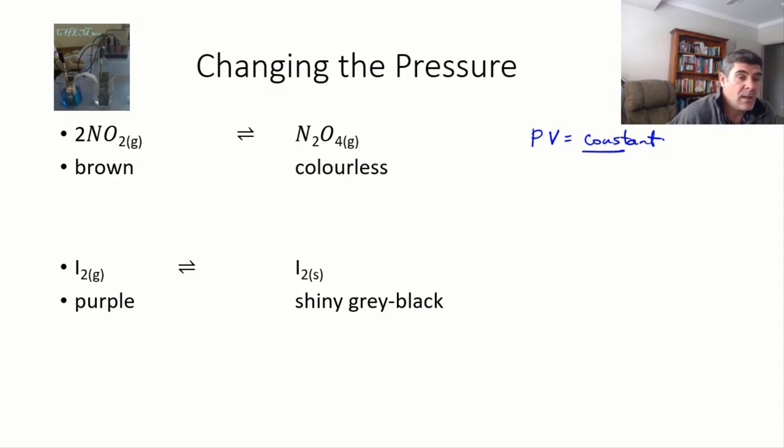In systems involving gases, it's very difficult to affect one of these without affecting the other. If you want to increase the pressure of a system, an equilibrium system involving gases, the easiest way to do that is to decrease the volume and vice versa.